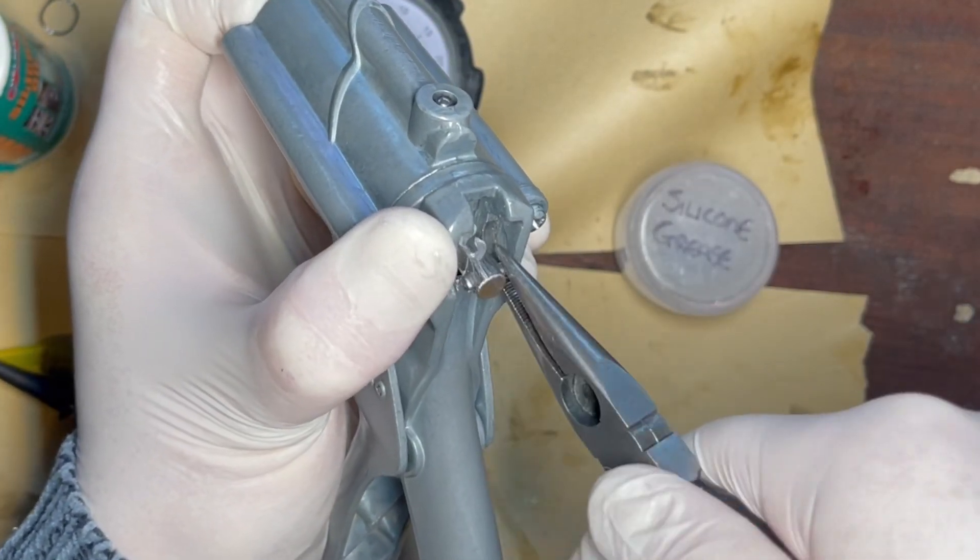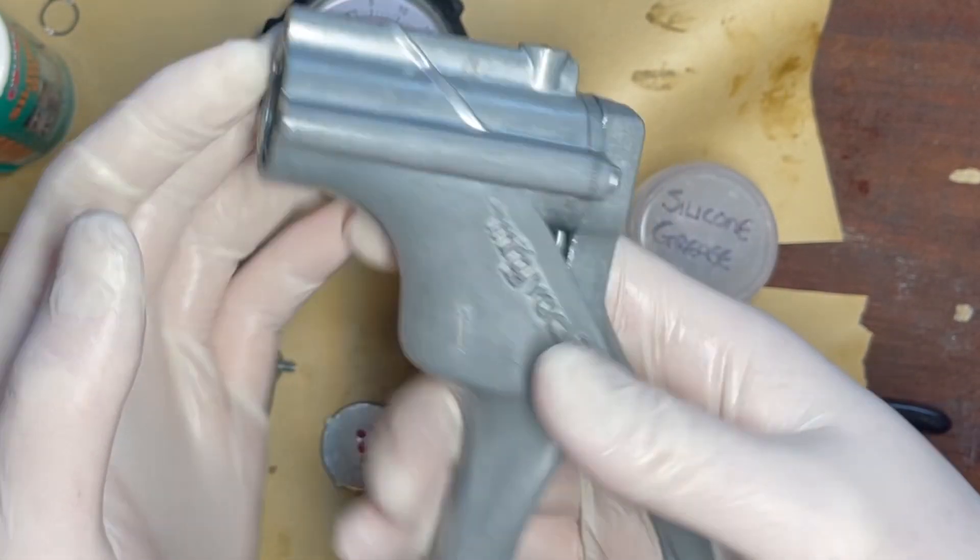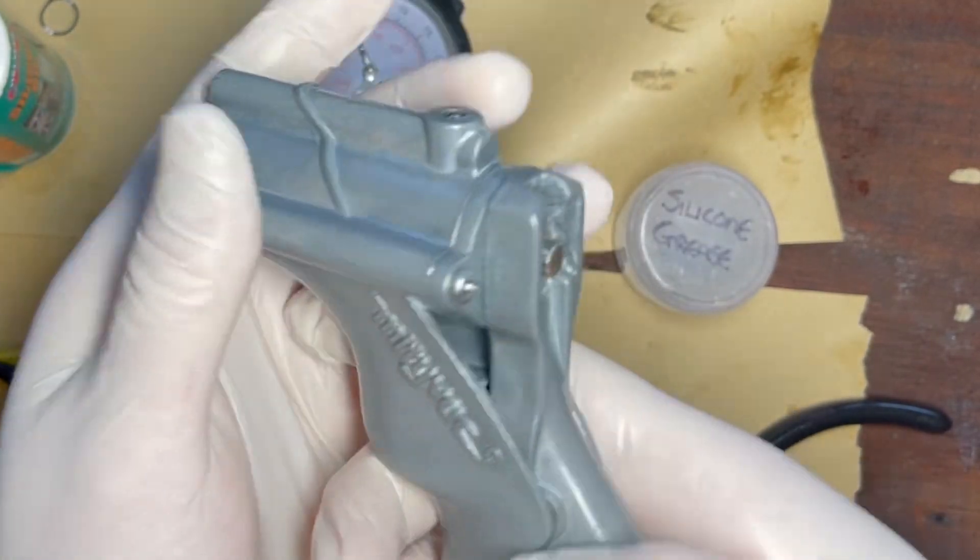Orientate it that way. We're now going to twist the pump 90 degrees, slowly lower it back down. And then we have the handle, the pump, the piston, and the spring all in place, just like it should be.